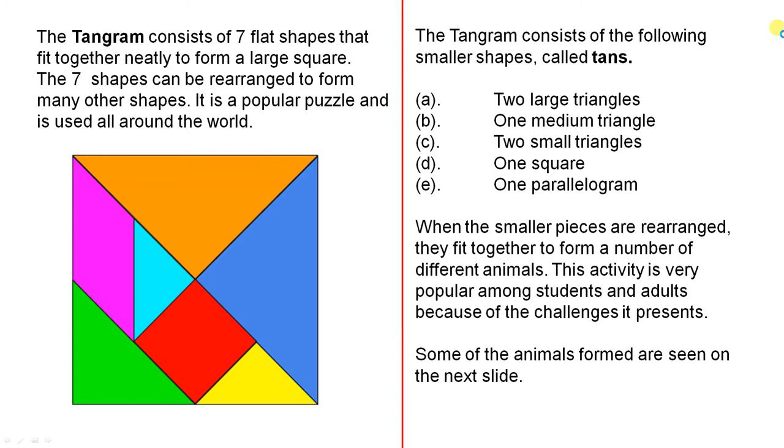The Tangram consists of seven flat shapes that fit together neatly to form a large square. The seven shapes can be rearranged to form many other shapes. It is a popular puzzle and is used all around the world. The Tangram consists of the following smaller shapes called tans.